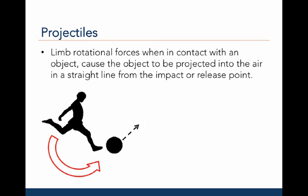Limb rotational forces, when in contact with an object, cause that object to be projected into the air in a straight line from the impact or release point. For example, the soccer player rotates his leg around the hip joint. When he contacts the ball, the ball will be projected in a straight line from the point of contact. The linear velocity of a ball being projected is equal to the radius of rotation — in this case the limb length — times the angular velocity, or the speed with which the limb rotates.